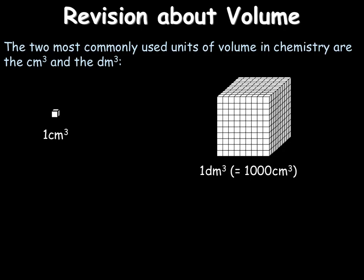In the previous video on working out concentrations we looked at volume. As a quick reminder, in chemistry we tend to use centimetre cubed and decimetre cubed. Here we have 1 centimetre cubed, here we have 1 decimetre cubed or 1000 centimetres cubed. You must make sure that you can convert between the two.